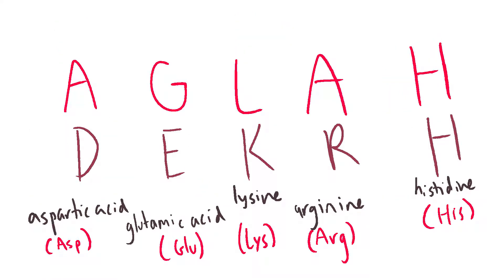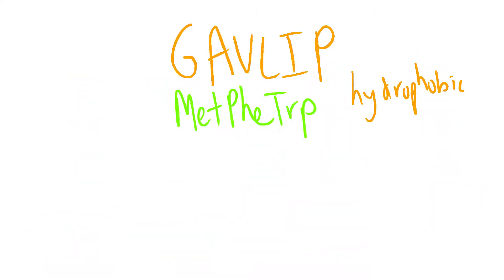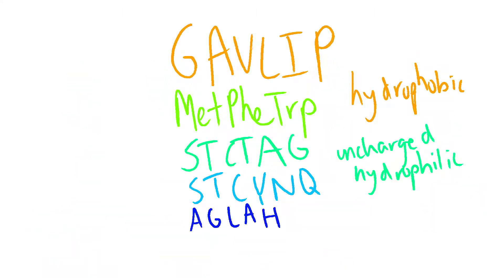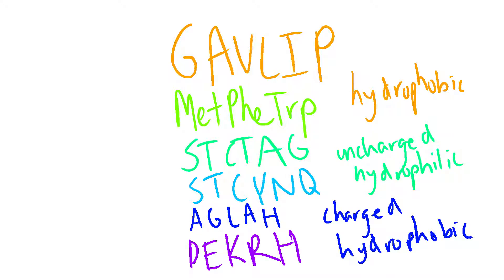All of the charged polar amino acids have the first three letters as their abbreviations. In summary, the mnemonics you have to know to memorize all 20 amino acids are GAVLIP, MetPheTrp, CYTICATAG, CYTICAYUNK, AGLA, and DECRA.